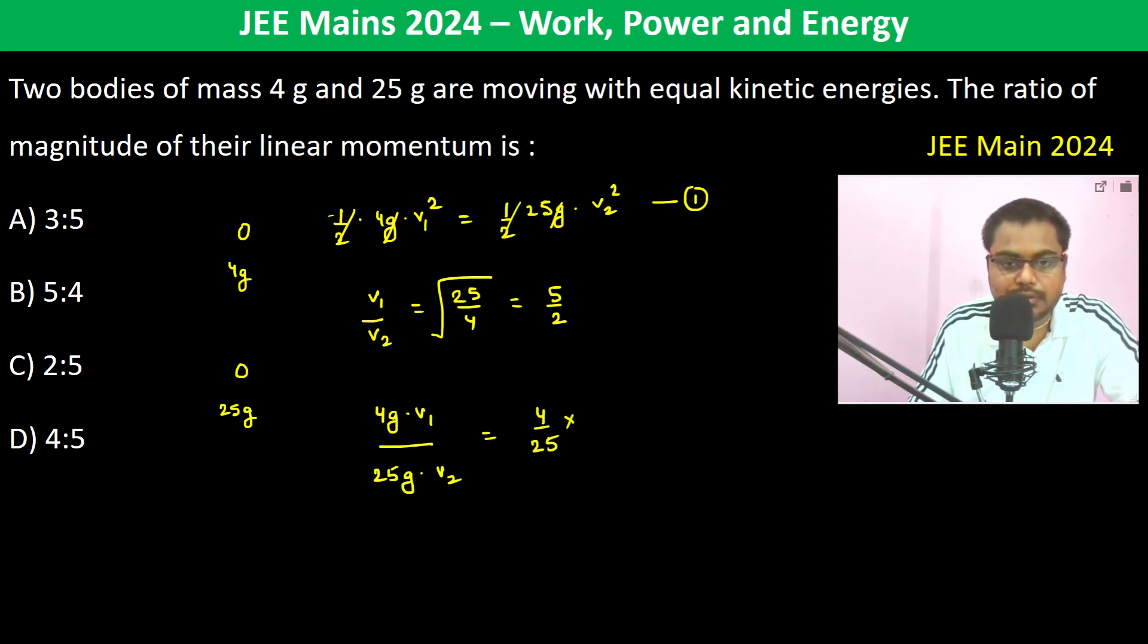by 25 into 5 by 2, so therefore it's 2 by 5. C is going to be the answer. Thank you.